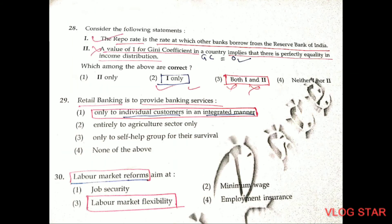Question number 28. Only the first statement is correct: the repo rate is the rate at which other banks borrow from the Reserve Bank of India. The second statement is not correct — when the Gini coefficient equals zero (not one), it implies perfectly equal income distribution. Question number 29. Retail banking provides banking services only to individual customers in an integrated manner — the first option is correct.